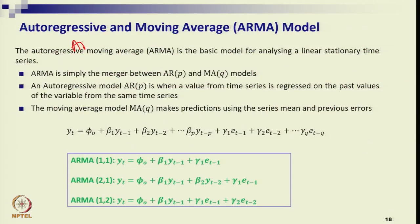Let us discuss the ARMA process — that means autoregressive and moving average process put together. We understood the AR model, we understood the MA model, and now we will add both of them and understand the ARMA model.